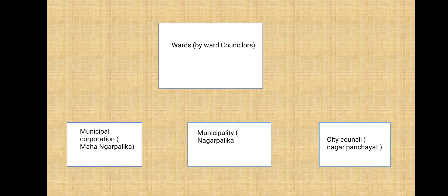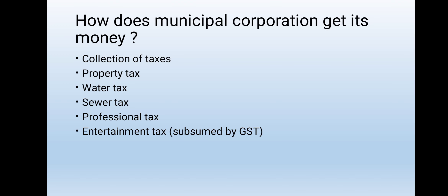Now we will see about wards. There are three different divisions: these are under wards by the ward councillor — municipal corporation (Mahanagar Palika), municipality (Nagar Palika), and city council (Nagar Panchayat). These three different sections come under this structure. Now we will talk about how the municipal corporation gets its money.